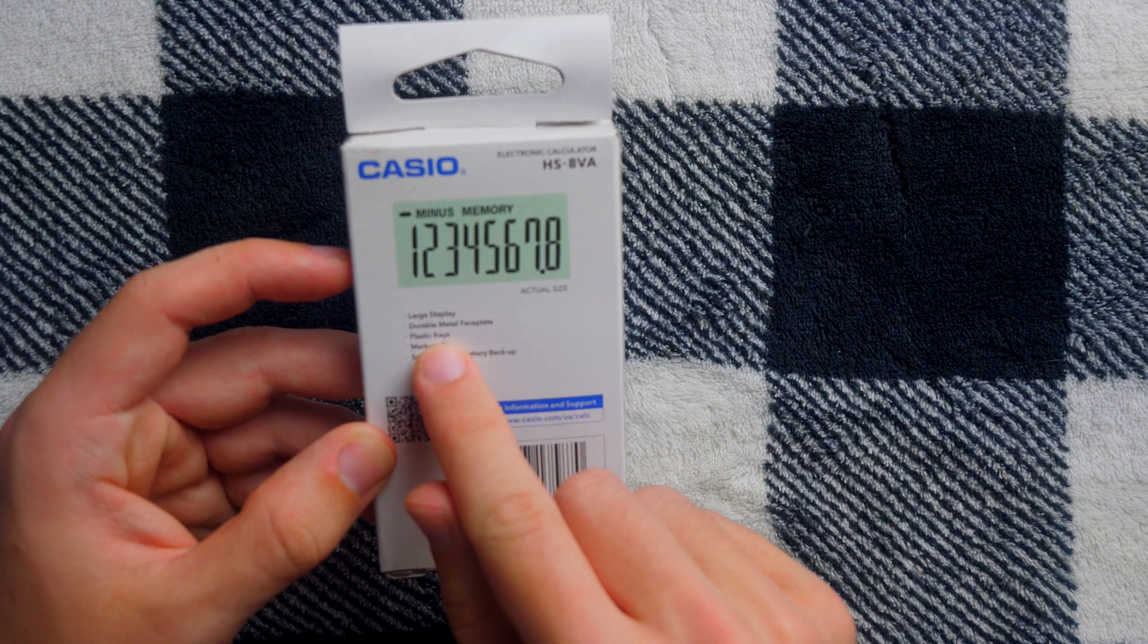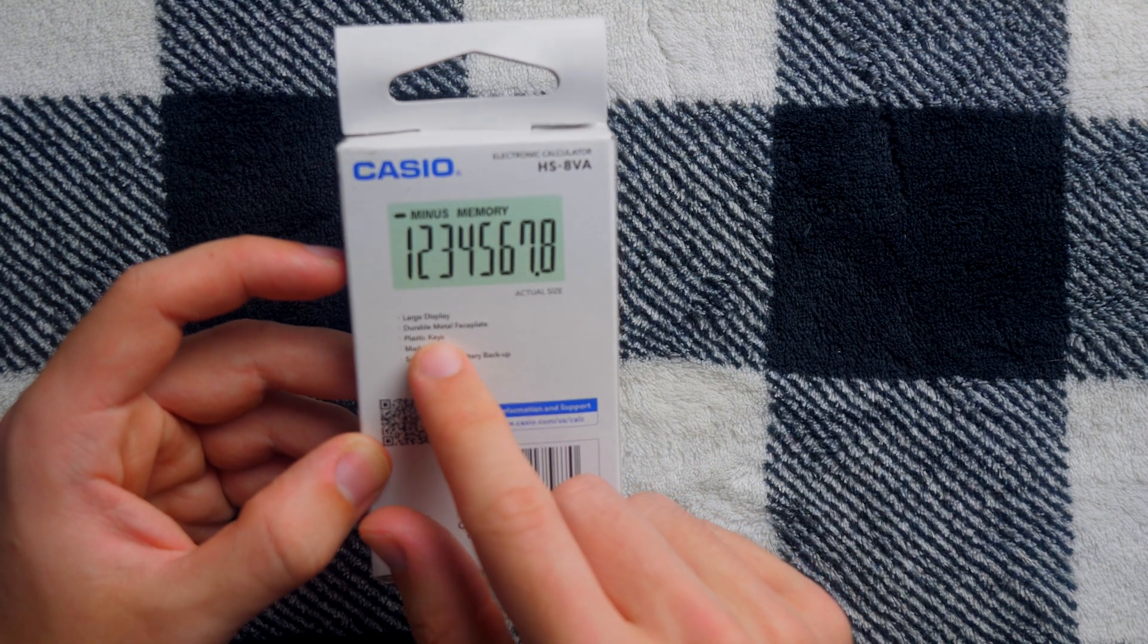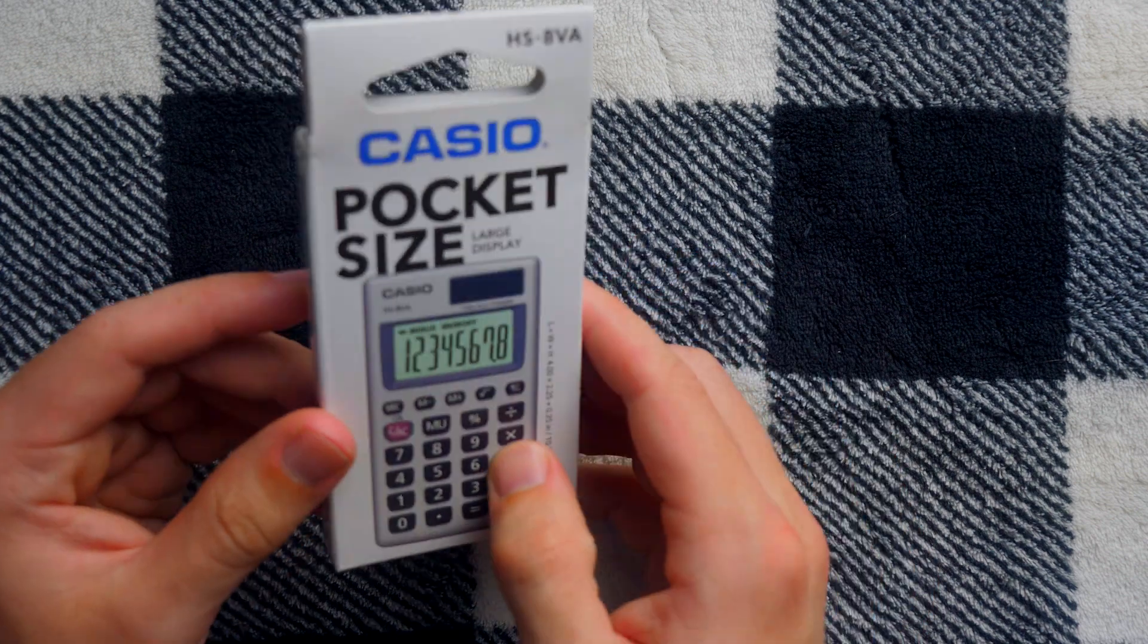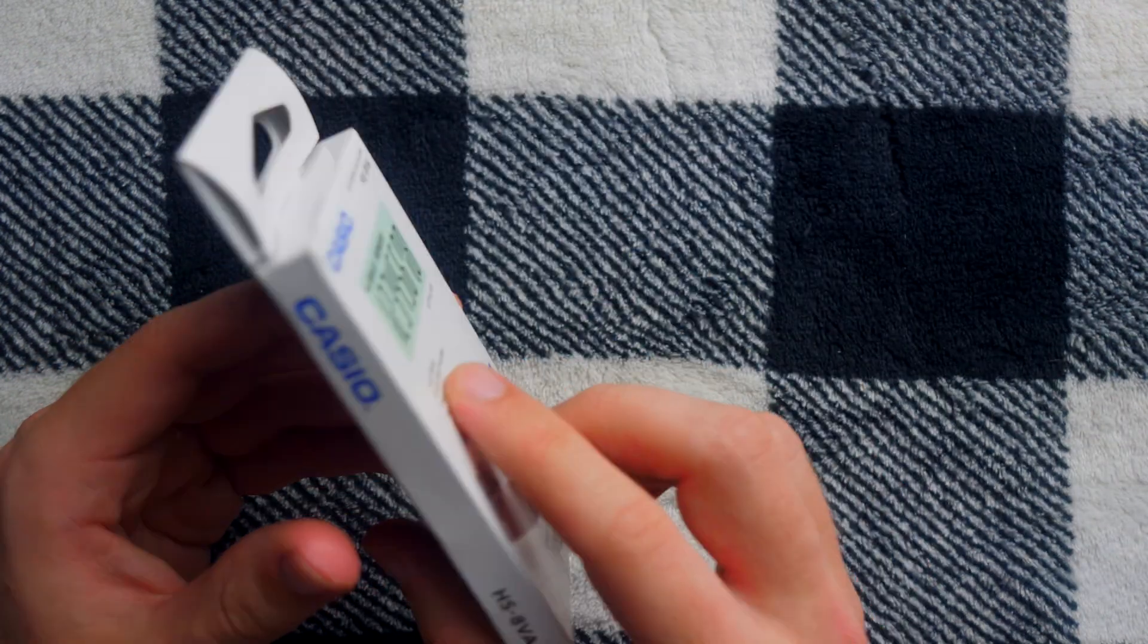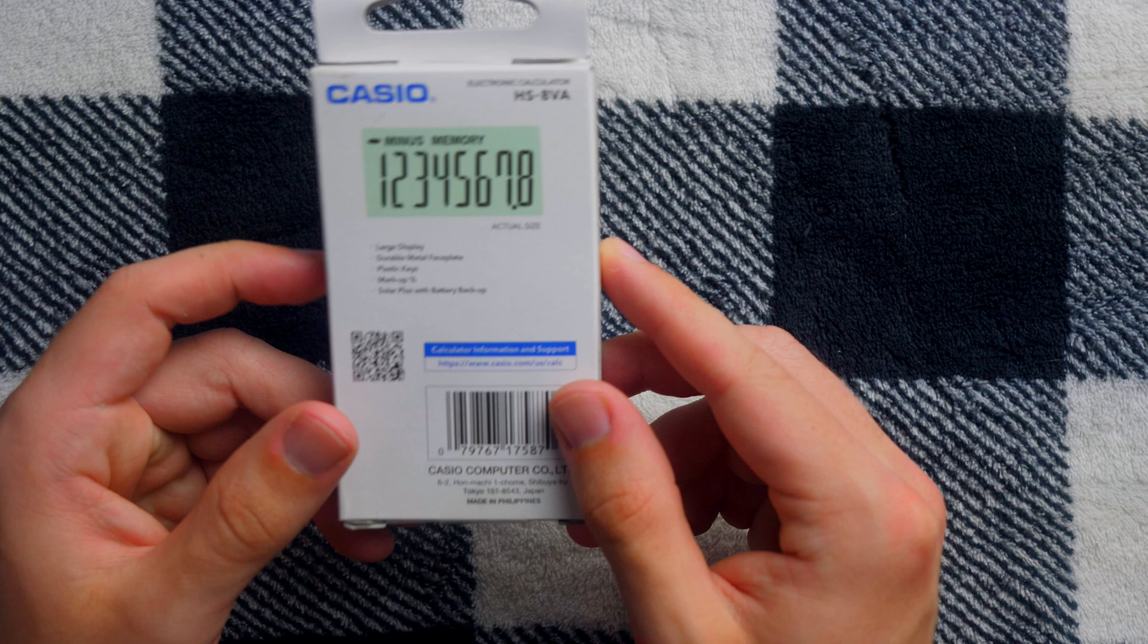And then the memory of course would tell you if you have a number in memory or whatever. Large display, durable metal face plate. That's good. Always need a nice rugged calculator, especially if it's going to be tiny and you're going to take it with you everywhere. You need it to be rugged.